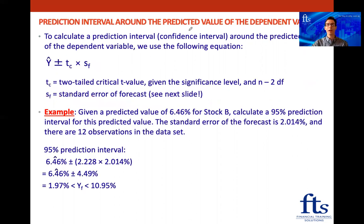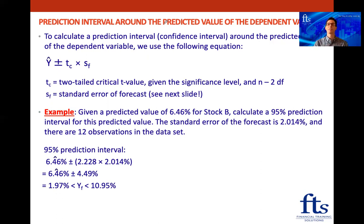Now we're going on to the prediction interval around the predicted value of the dependent variable that we just worked out. This is not too bad because we've already done confidence intervals in the sampling and estimation reading. To calculate a prediction interval — or confidence interval — around our predicted value, we take that predicted value, for example the 6.46%, and build an interval around it using this equation.